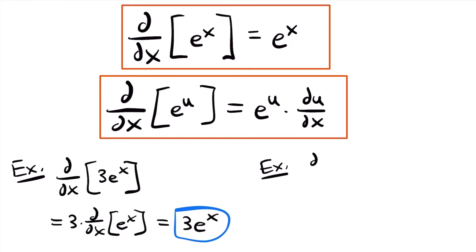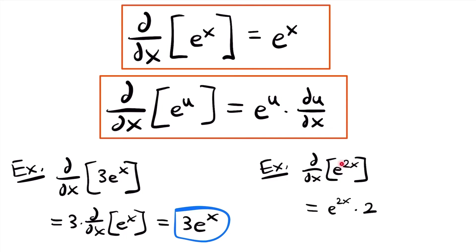Next, d/dx of e to the power of 2x. Instead of just x in the exponent, we have 2x, so we need the chain rule version. Here u equals 2x, so we write e to the power of 2x and multiply by the derivative of 2x, which is just 2. So our derivative is 2 times e to the power of 2x.